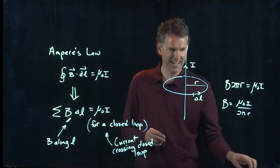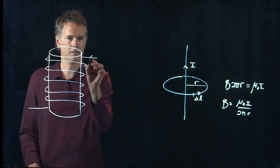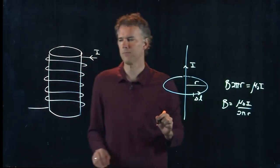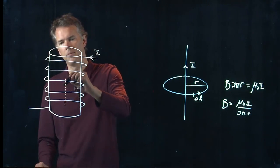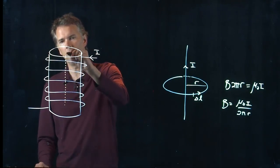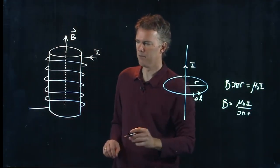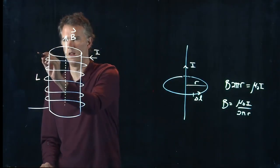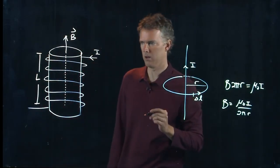Alright, what about in the case of the solenoid? Okay, there's the current I. We know that B is going to be pointing up inside this thing. And let's give this path a length L. Okay, the solenoid is L long.